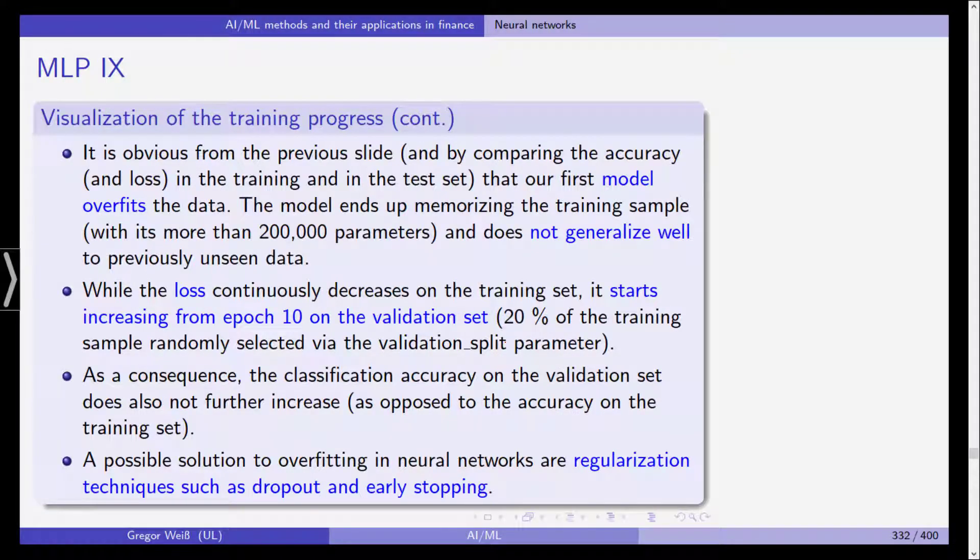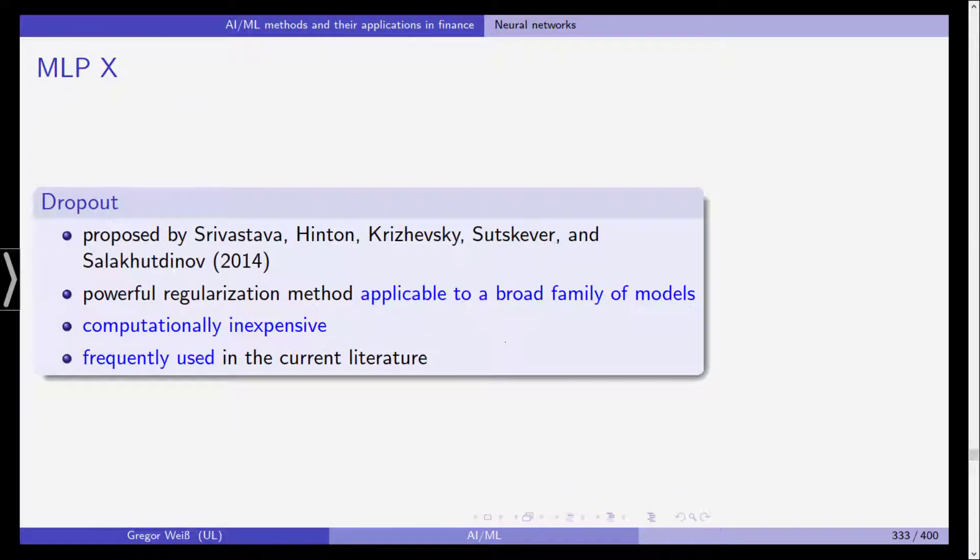A possible solution to overfitting in neural networks is regularization, and this can be done for example via dropout and early stopping. We will be doing this in this example here and exemplifying how these two procedures work.